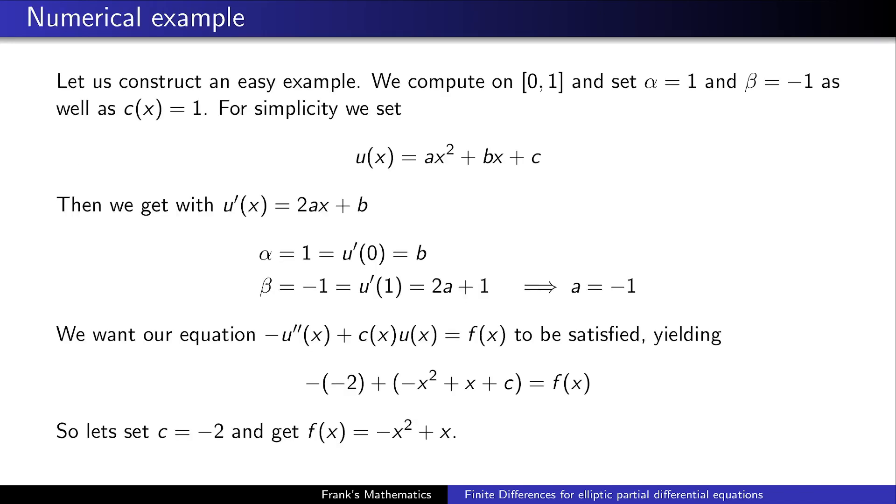In the following, we want to construct an easy example. We are working on the domain 0 to 1. We set alpha to be 1 and beta to be minus 1. And for simplicity, we set c to constant 1. Our prototypical solution is just a quadratic polynomial, so ax² + bx + c. And in the following, we want to find coefficients for a and b and c. We use our Neumann condition. So alpha equals 1, which is u' at 0, and similar for u' at 1, to get values for the coefficient of a and b.